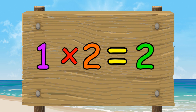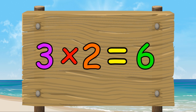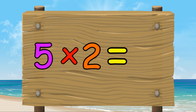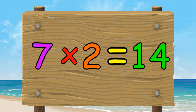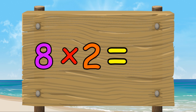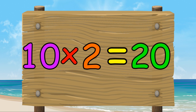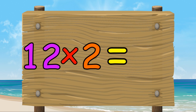1 times 2 equals 2. 2 times 2 equals 4. 3 times 2 equals 6. 4 times 2 equals 8. 5 times 2 equals 10. 6 times 2 equals 12. 7 times 2 equals 14. 8 times 2 equals 16. 9 times 2 equals 18. 10 times 2 equals 20. 11 times 2 equals 22. 12 times 2 equals 24.